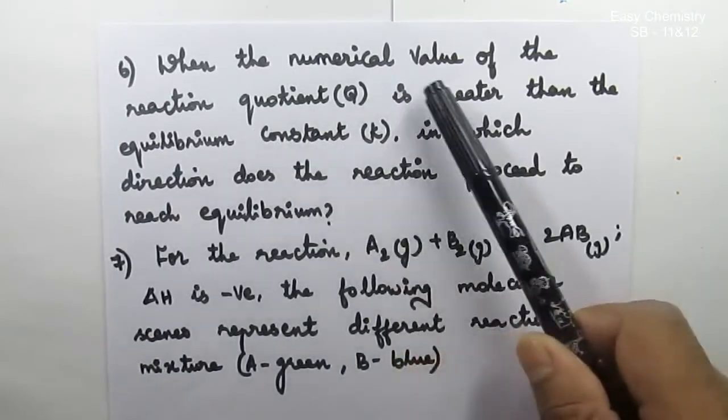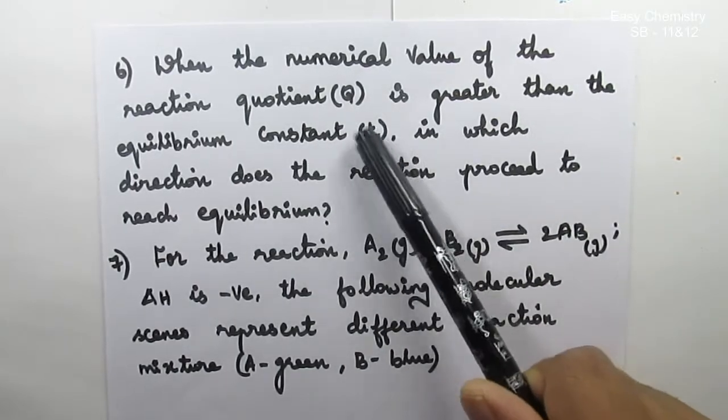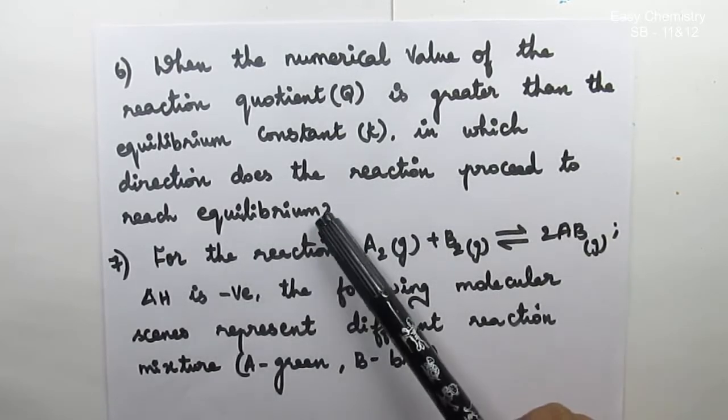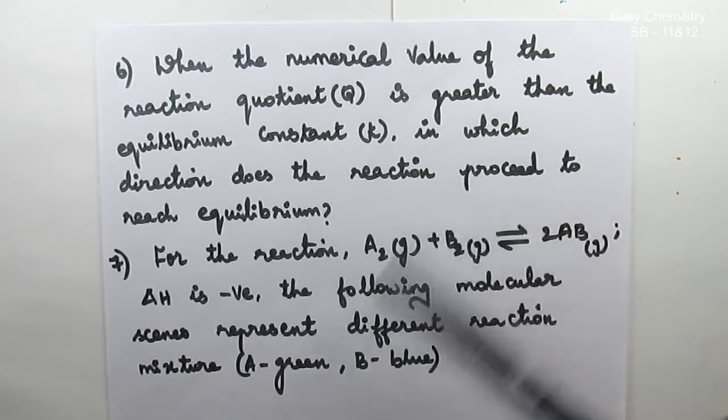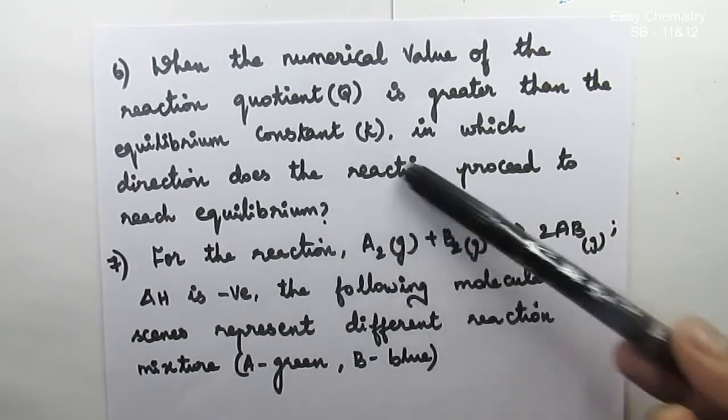Question number 5: When the numerical value of the reaction quotient Q is greater than the equilibrium constant K, in which direction does the reaction proceed to reach equilibrium? This is the prediction of reaction. It will be one word answer.